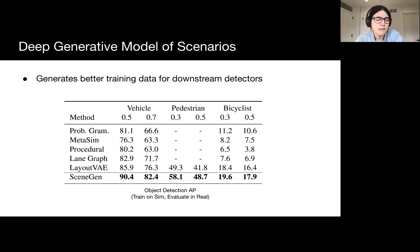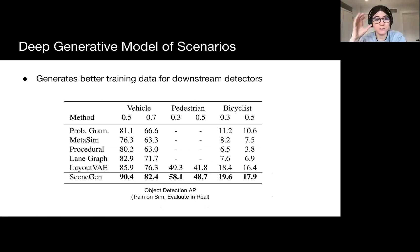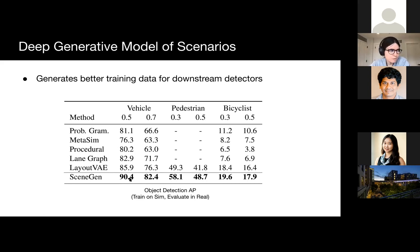More important than good statistics is the fact that you can employ this technique to generate arbitrary amounts of training data. Together with the assets I showed before, we can generate the scenario, import the 3D assets, and train our perception system. The way that we generate these scenarios matters a lot in practice for building much more performant detectors. Not only do you get better statistics and more realistic-looking scenes — it actually matters in practice. The only thing that changes across comparisons is the generation approach; everyone uses the same assets and the same LiDAR simulation to create the data.